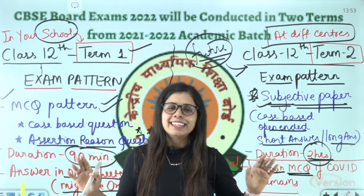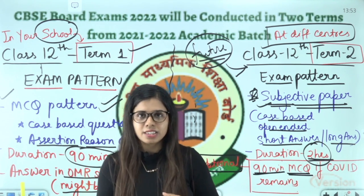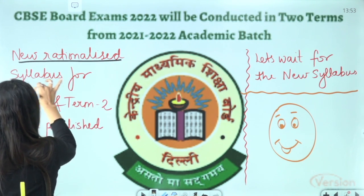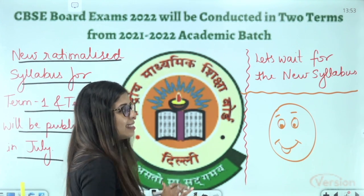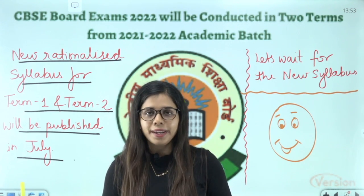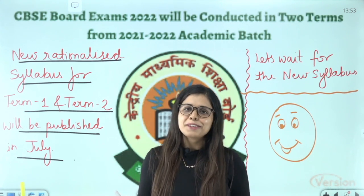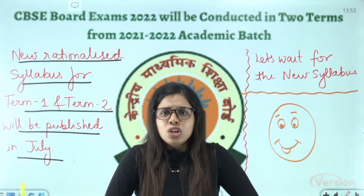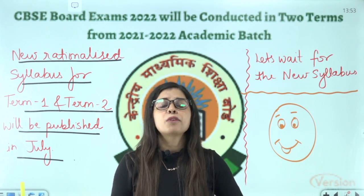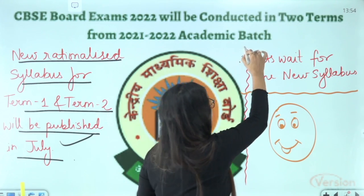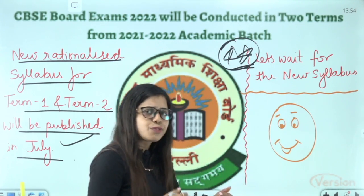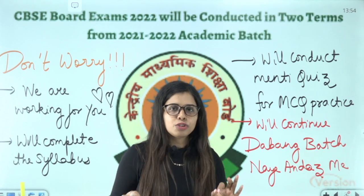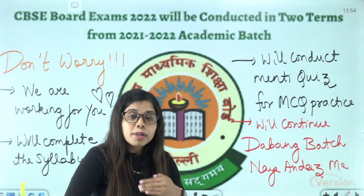I have given you overall clarity on Term 1 and Term 2 for the 12th CBSE board exams. What we are waiting for is a proper syllabus — the new rationalized syllabus for Term 1 and Term 2 will be published in July, this is the latest update from CBSE. We are waiting until now for the new syllabus. July is coming, then September, October, November — we have about two and a half months. What we can do is focus on solid state, and I hope that at the end of July your syllabus will be released. The Term 1 paper is fully MCQ based, so we have to prepare ourselves in that way.